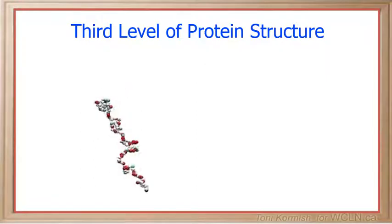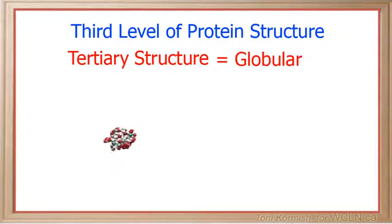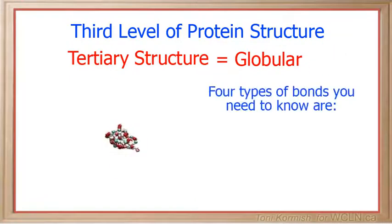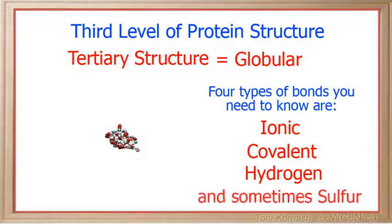As a protein molecule continues to get larger, the secondary structures begin to bend and fold on themselves and form the tertiary level of protein structure. This structure is actually referred to as globular, and there are four types of bonds that are involved in holding the amino acid together in this globular structure, and they are ionic, covalent, hydrogen, and sometimes sulfur bonds.